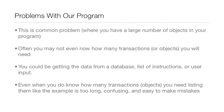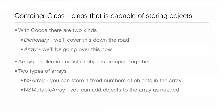This is a very common problem where you have a lot of objects in your program and you may not even know how many transactions or objects you'll need. You could be getting data from a database, a list of instructions, or user input. Even if you do know exactly how many objects you'll need, listing them individually is too long, confusing, and way too easy to make mistakes.